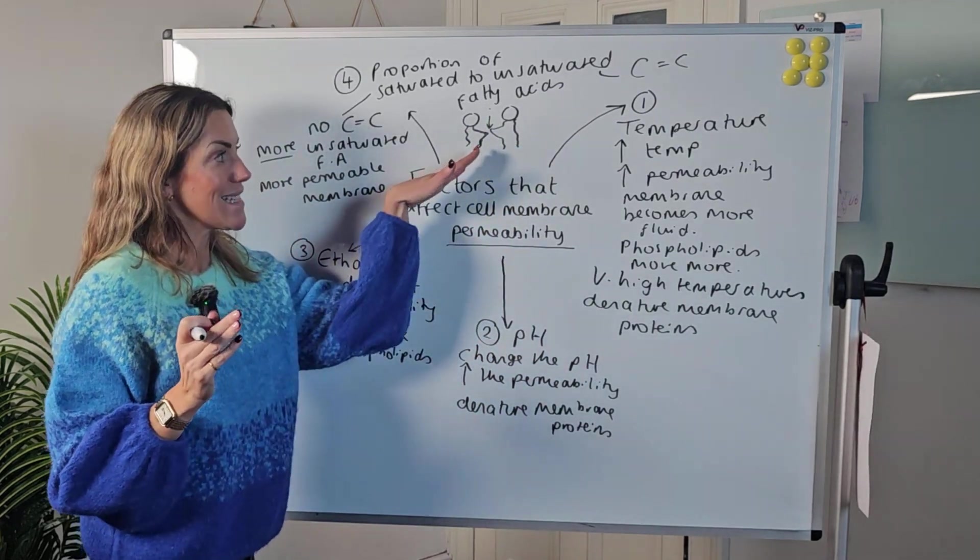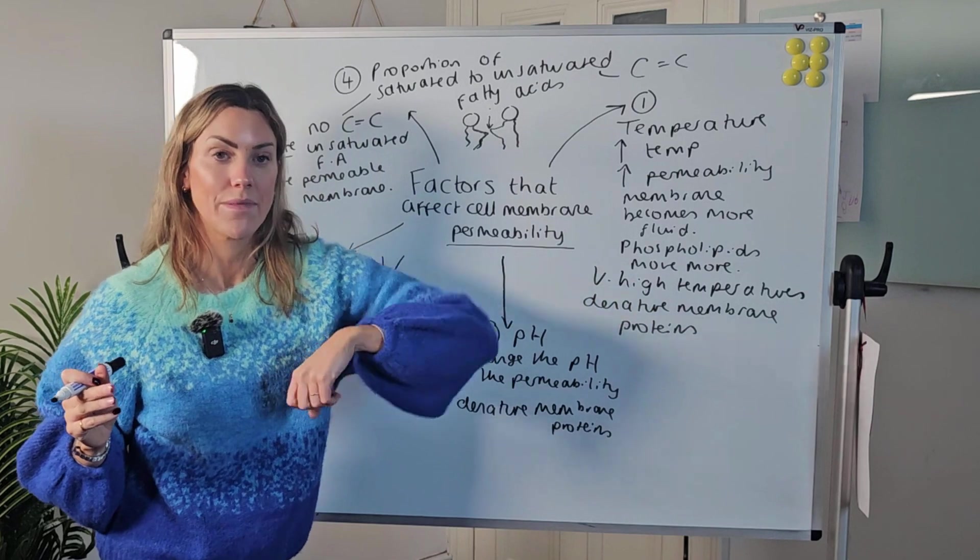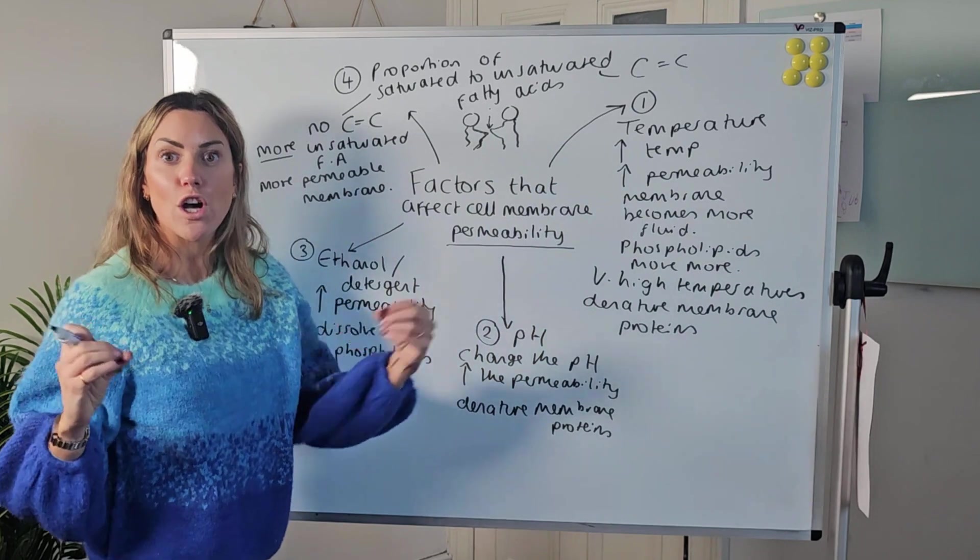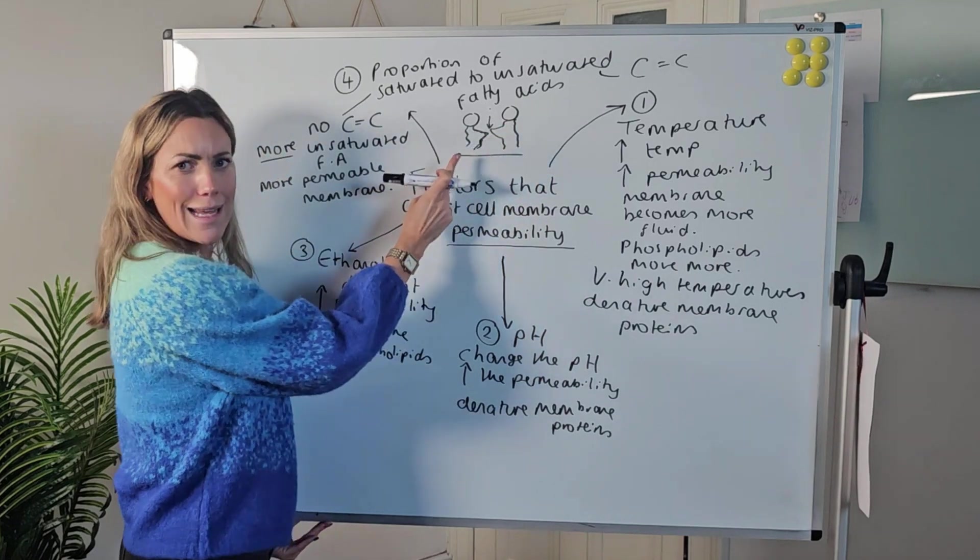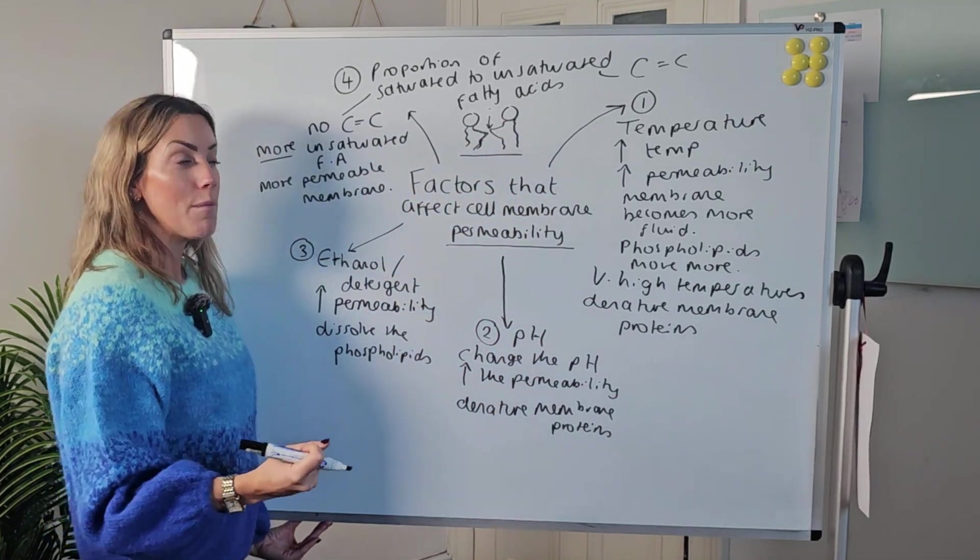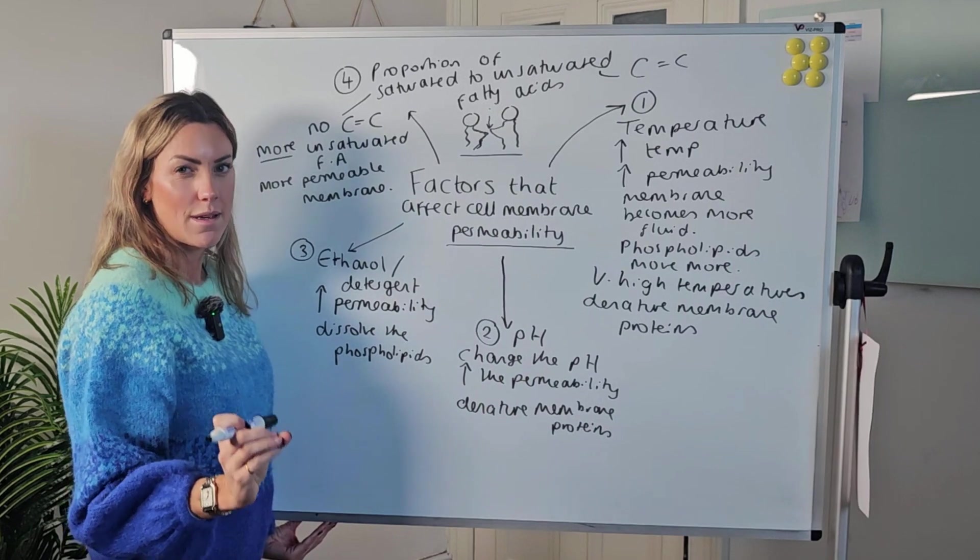Because the fatty acid tail, wherever there's a carbon-carbon double bond, kinks out, that means they cannot pack closely together, which means the phospholipids will be further apart. And if the phospholipids are further apart, then the membrane will be more permeable because there's more space between the phospholipids.